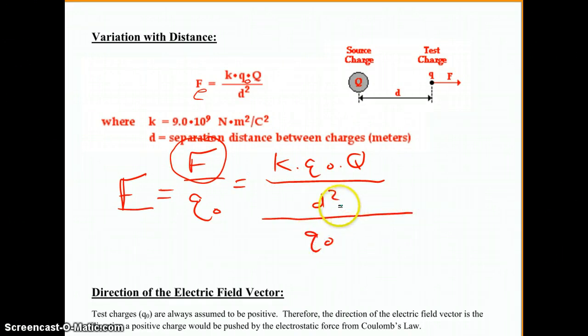The test charge cancels out, and we are left with the electric field strength is k, the electrical constant, times Q, the source charge, and then divided by the distance squared, and that's the center-to-center distance.